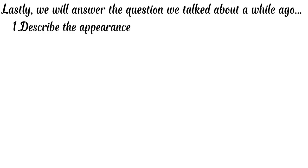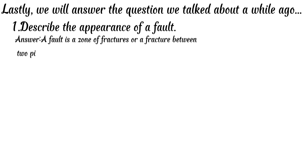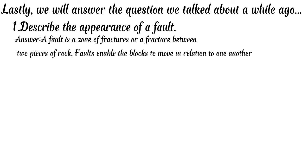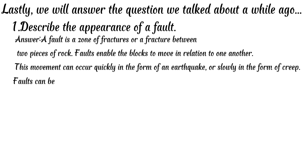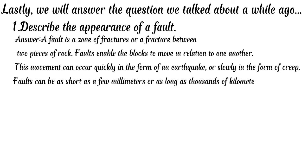Number one: describe the appearance of a fault. A fault is a zone of fractures, or a fracture between two pieces of rock. Faults enable the blocks to move in relation to one another. This movement can occur quickly in the form of an earthquake, or slowly in the form of a creep. Faults can be as short as a few millimeters or as long as thousands of kilometers.